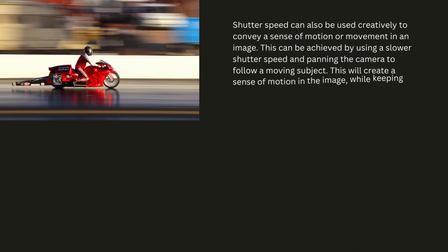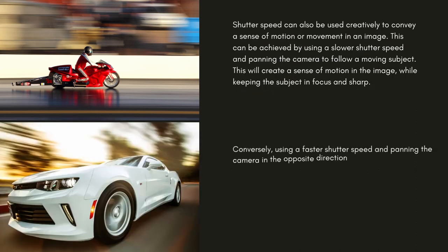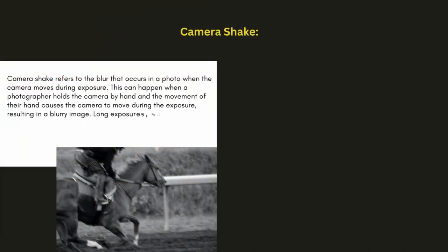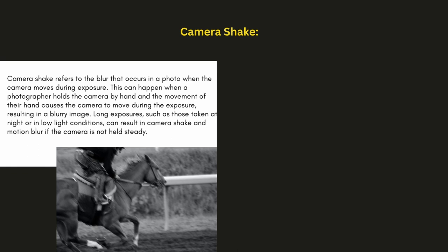Shutter speed can also be used creatively to convey a sense of motion or movement. This can be achieved by using a slower shutter speed and panning the camera to follow a moving subject, creating a sense of motion while keeping the subject in focus and sharp. Conversely, using a faster shutter speed and panning the camera in the opposite direction of a moving subject can create motion blur in the background while keeping the subject sharp. Camera shake refers to the blur that occurs in a photo when the camera moves during exposure, which can happen when a photographer hand-holds the camera.